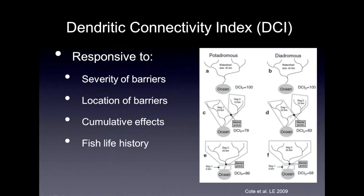We published the paper and it got some attention, but we realized there was still quite a lot of work to do. A key issue is passability, because passability is one of the components in the equation for calculating the DCI. The DCI really depends on how you define or quantify when a barrier is passable. There's a huge literature on passability across individual barriers and many different methods — these can be based on population structure, direct observation of whether fish move across a barrier, genetics, modeling, rule-based methods, or expert opinion.